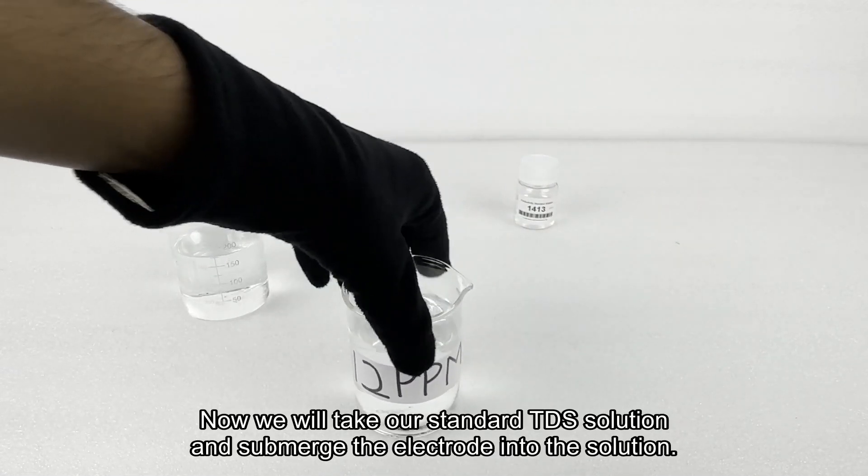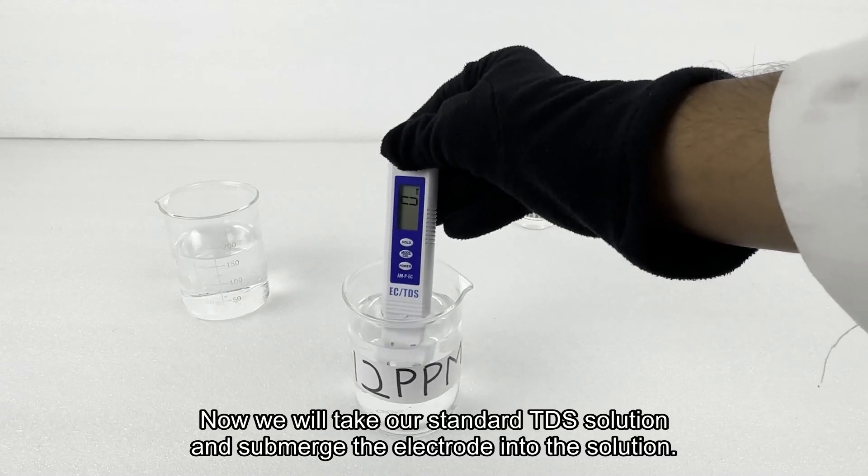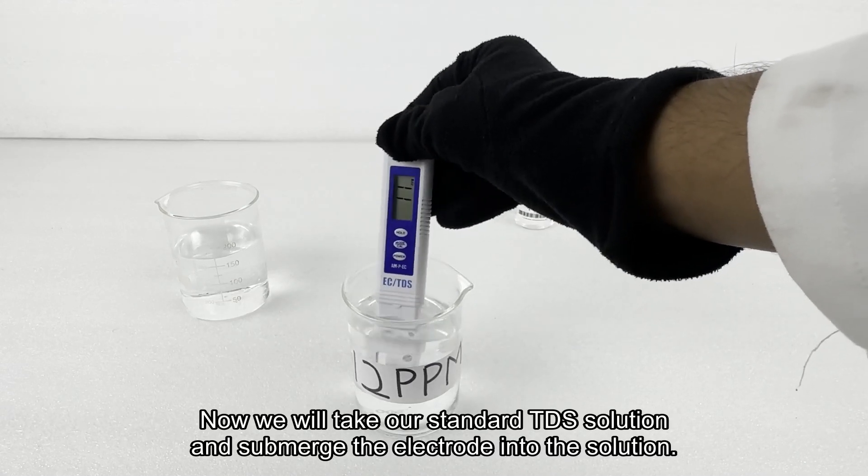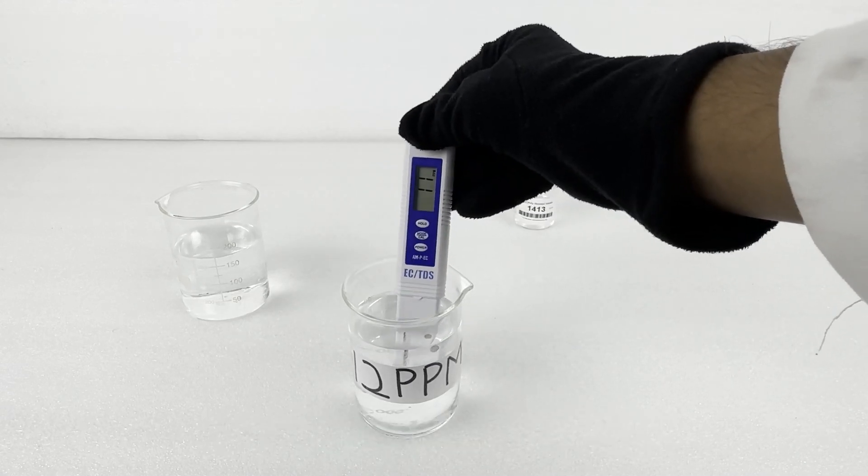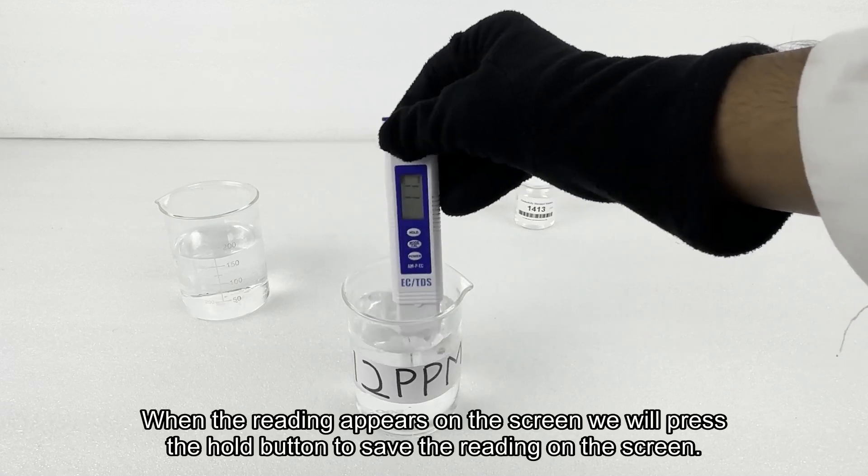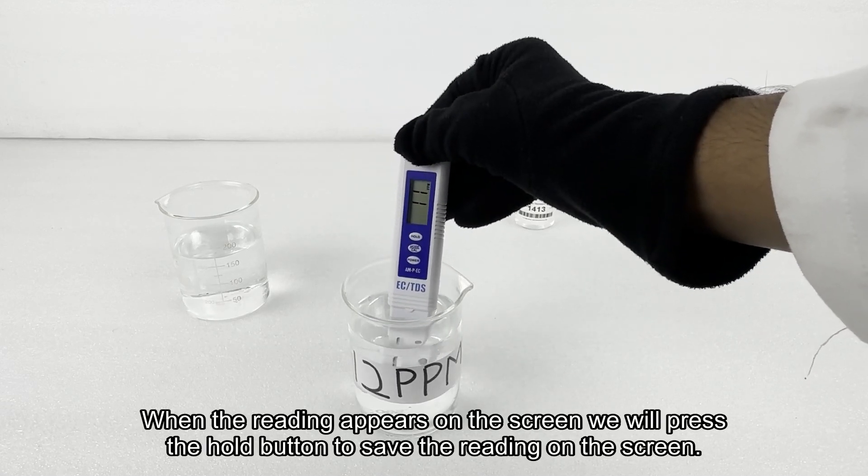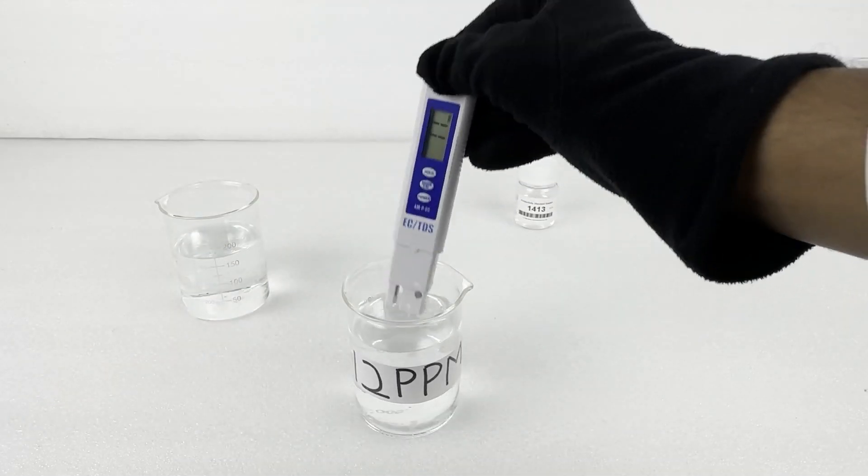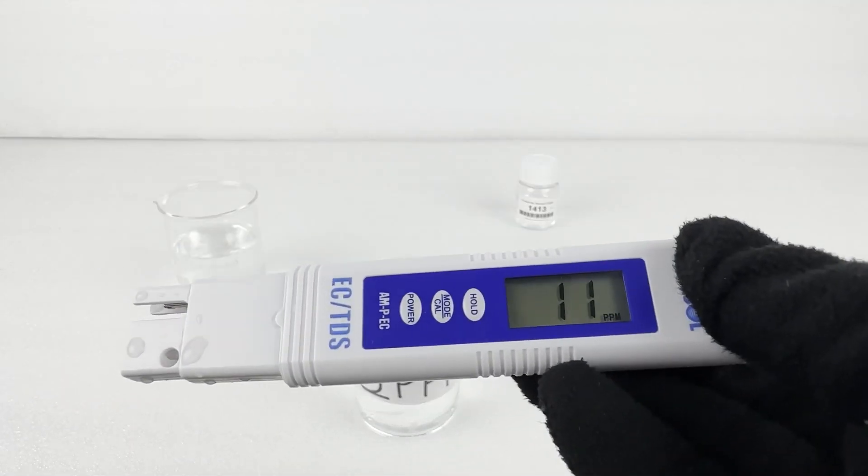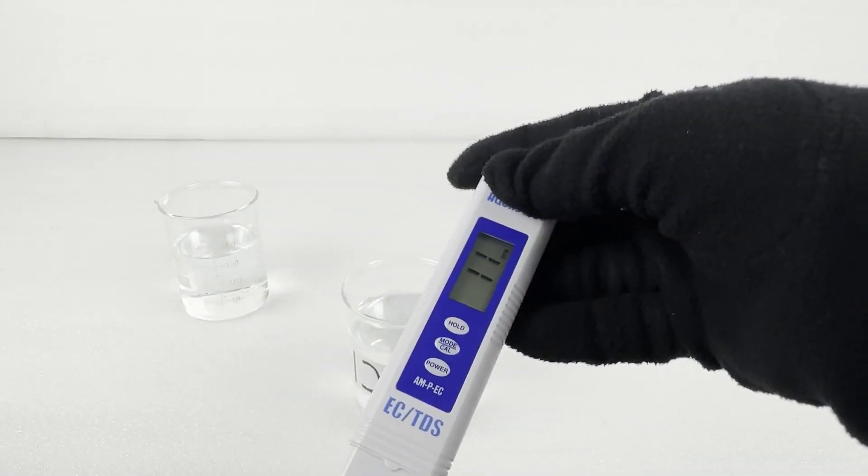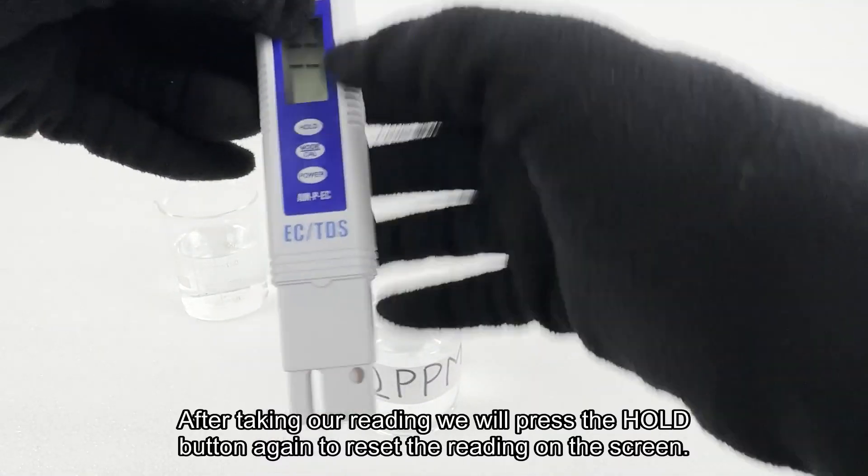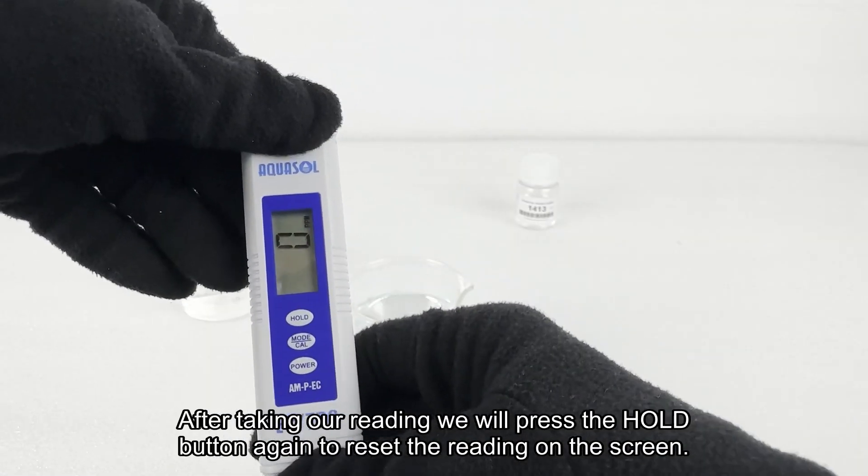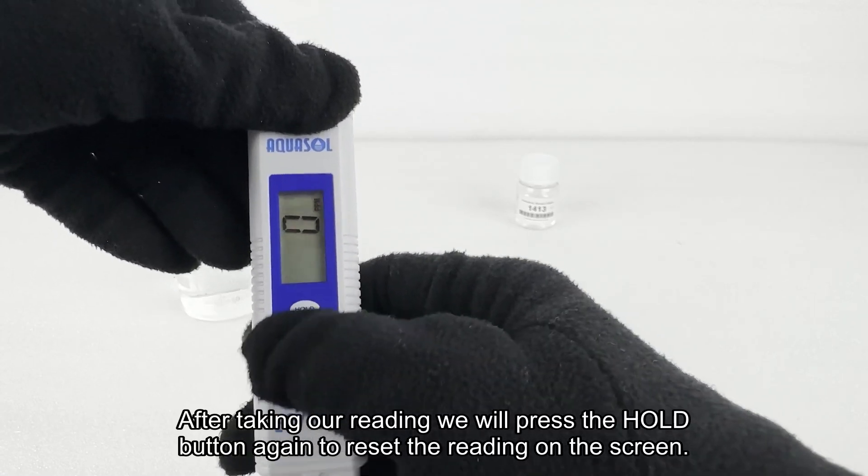Now we will take our 12 ppm standard solution and submerge the electrode into the solution. When the reading appears on the screen we will press the hold button. After taking our reading we will press the hold button again to reset the reading on the screen.